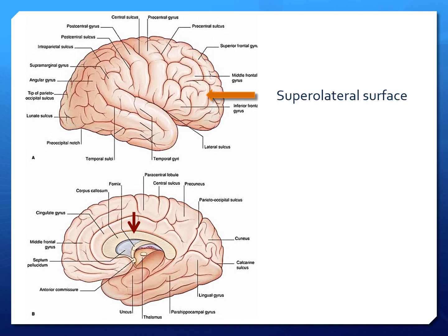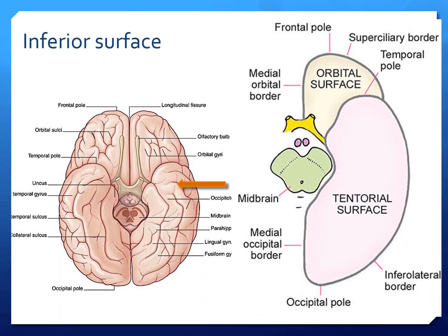This picture shows the superolateral surface which is convex. This is a flat medial surface shown in the lower diagram. There is a red arrow pointing at a C-shaped structure which is the corpus callosum, which connects the two cerebral hemispheres. The inferior surface is divided into anterior orbital surface and the tentorial surface.